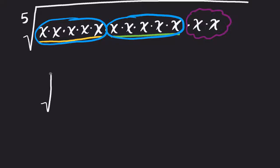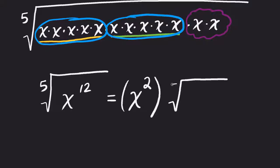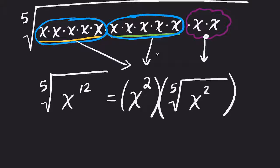If I'm looking for the fifth root of x to the 12th, what I get is two complete sets, so I get x squared. And what's left over on the inside, I still have the fifth root of x squared. I still have my two left over, and I have my two complete sets that generated that one. So my final answer is x squared and the fifth root of x squared.